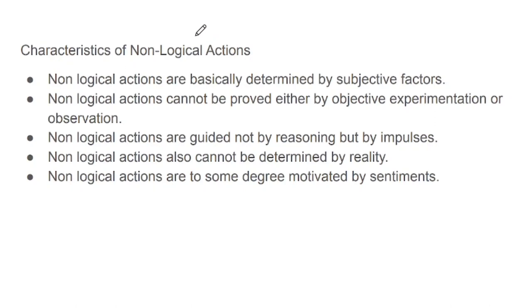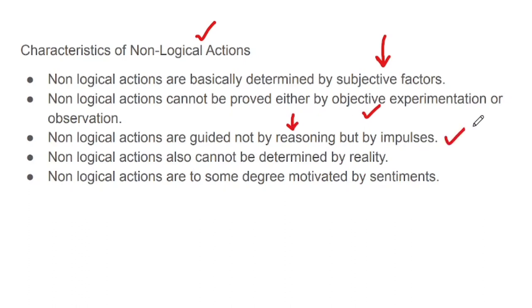The characteristics of non-logical action: non-logical actions are basically determined by subjective factors; they cannot be proved either by objective experimentation or observation; they are guided not by reason but by impulses — our feelings and what we feel about things; and they cannot necessarily be determined by reality. Non-logical actions are to some degree motivated by sentiments. Key keywords for non-logical action: sentiments, biases, and subjectivity.